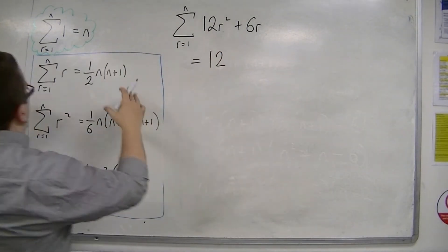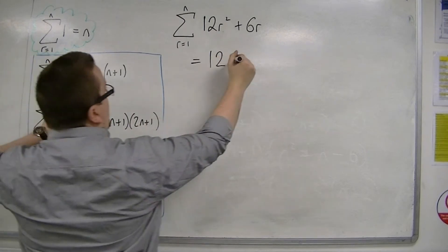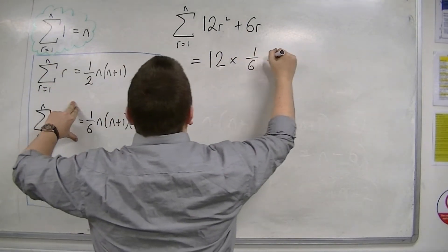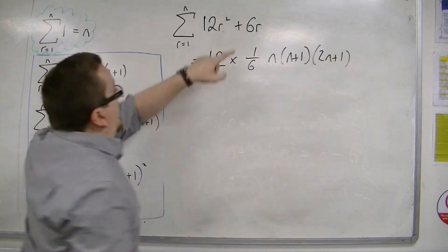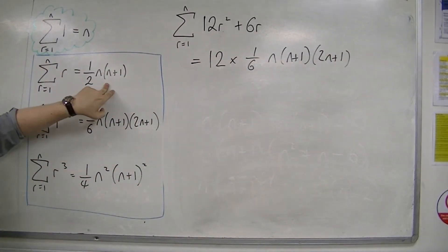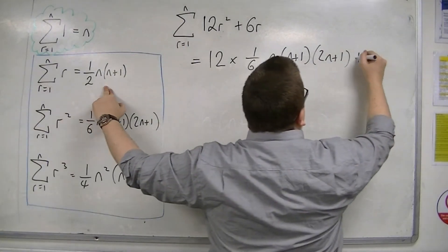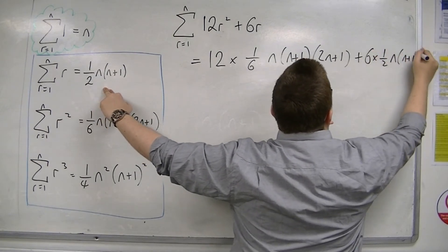We've got 12 lots of r squared, so 12 lots of 1 sixth n, n plus 1, 2n plus 1, plus 6 lots of r, so 6 lots of 1 half n, n plus 1.